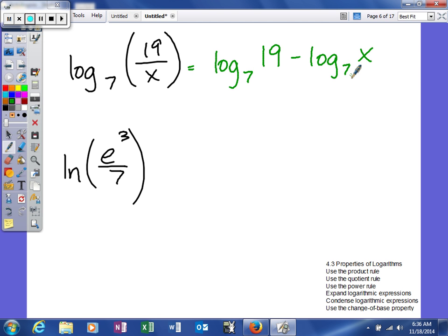On the next one, we'll have the natural log of e to the third, and then minus the natural log of 7. So on this one, we can actually simplify, because the natural log has a base of e. It's understood to be a base of e. So the base of the logarithm and the base of the exponential function are the same, so that will cancel and leave me 3 minus the natural log of 7.